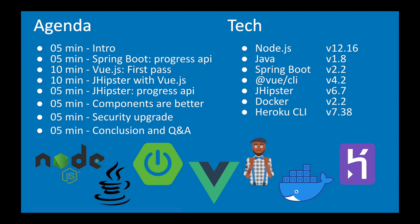So our agenda: we're going to start with Spring Boot, layer in a first pass at Vue.js, then switch over to JHipster with Vue.js and JHipster using a progress API. We'll write some Vue.js components, upgrade our security, and then wrap things up. We have a nice tech stack: Node.js and Java, Spring Boot and Vue, JHipster, Docker, and Heroku. We'll be using Docker to set up KeyCloak as an initial security service, and then we'll switch over to Okta using the Okta Heroku add-on, which is currently in beta.